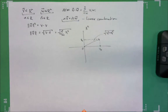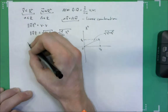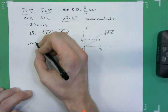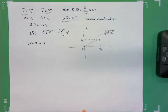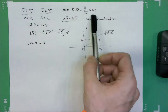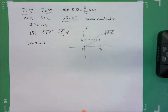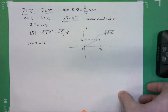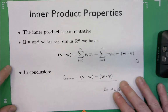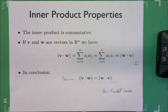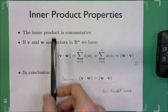Let's move on to more inner product properties. The last thing I showed last time was the commutativity of the dot product: v dot w is the same as w dot v. It's trivial because of the commutativity of real number multiplication, but it's a very good property — we will see later it's not always taken for granted, and it has lots of implications.